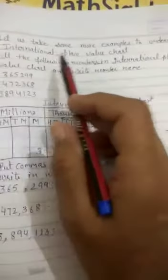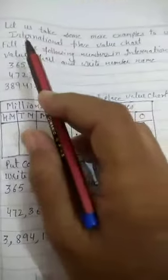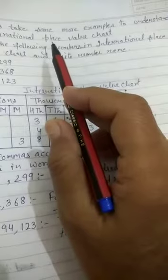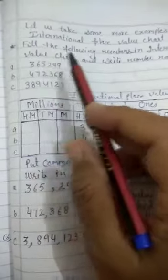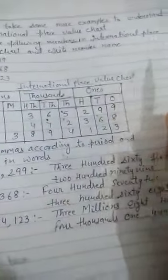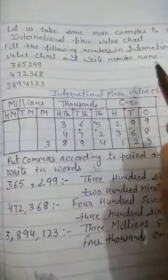Now students, let us take some more examples to understand international place value chart. Fill the following numbers in international place value chart and write their number names.